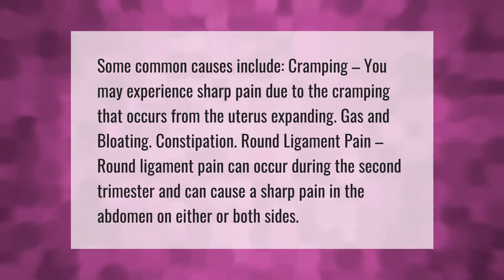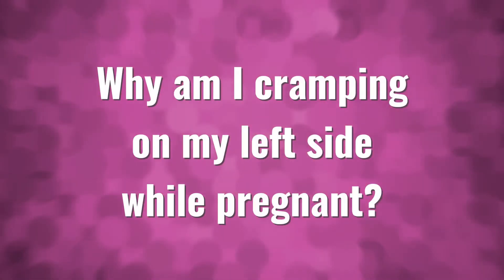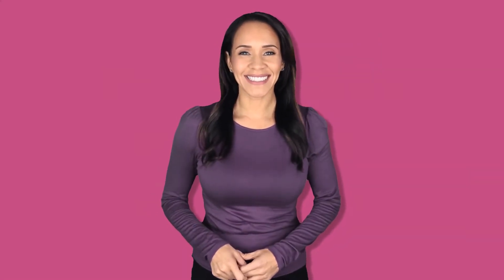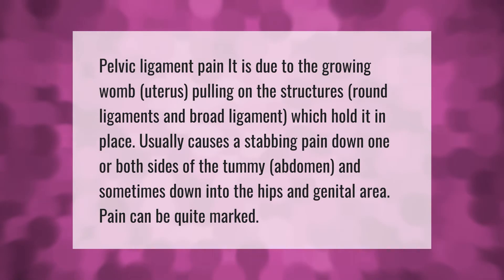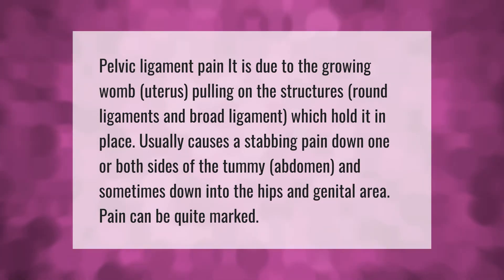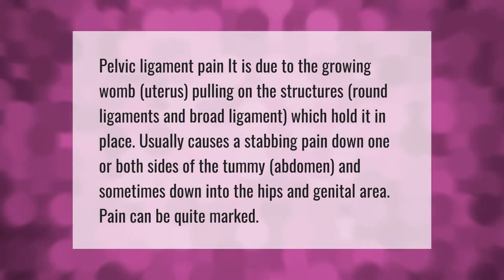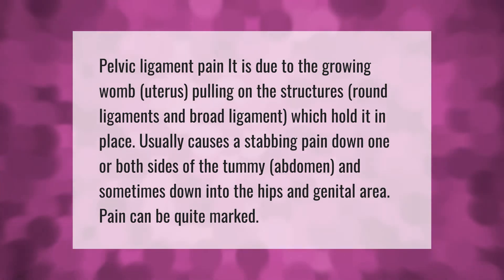Round ligament pain can cause sharp pain in the abdomen on either or both sides. Pelvic ligament pain is due to the growing womb pulling on the round ligaments and broad ligament which hold it in place, usually causing a stabbing pain down one or both sides of the tummy and sometimes down into the hips and genital area. Pain can be quite marked.